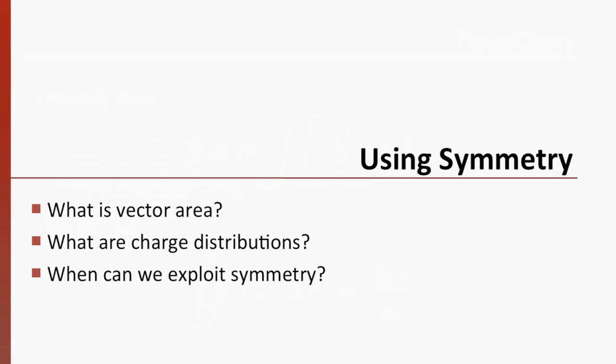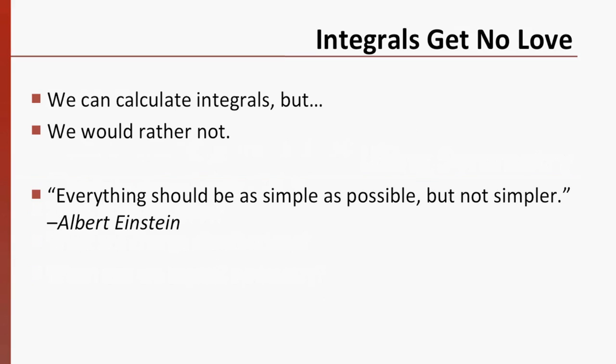To really use symmetry to our best advantage in Gauss's law, we need to understand a few more basic things. We need to be able to use vector areas, to categorize charge distributions, and to determine when and how the two can work together. The underlying reason we want to use symmetry is that integrals are difficult, significantly more difficult than derivatives. There are many situations in which we cannot determine the flux integral. Therefore, we seek to simplify.